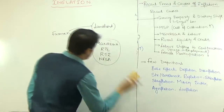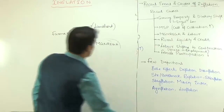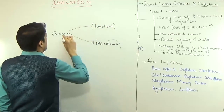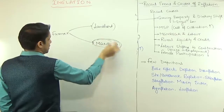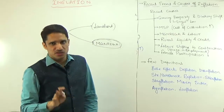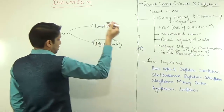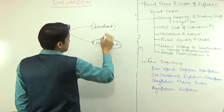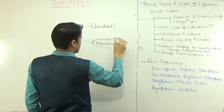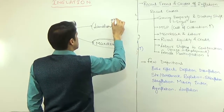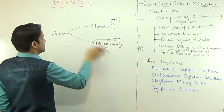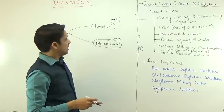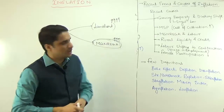Coming back to MGNREGA's economic impact: the farmer now has two options — work on the landlord's farmland or work under MGNREGA. Since MGNREGA wages are statutory and increase every year with inflation, landlords must also raise wages to compete. This increased bargaining power for farmers means higher agricultural wages, which causes inflation in the economy.